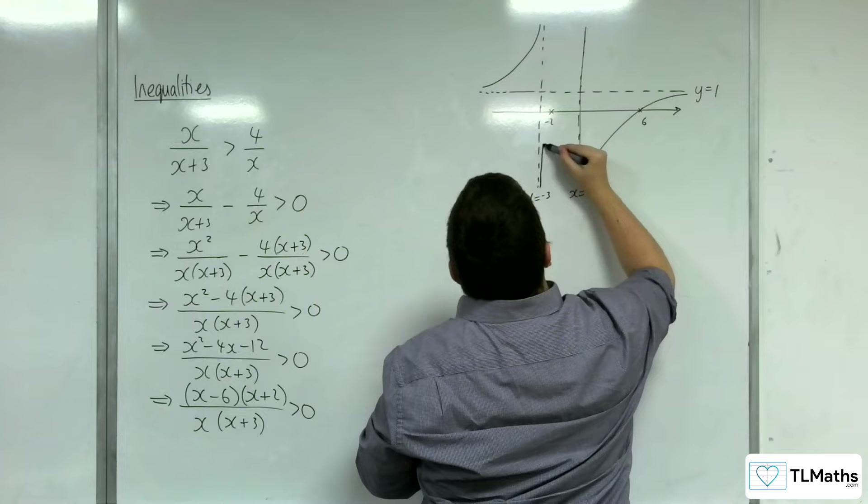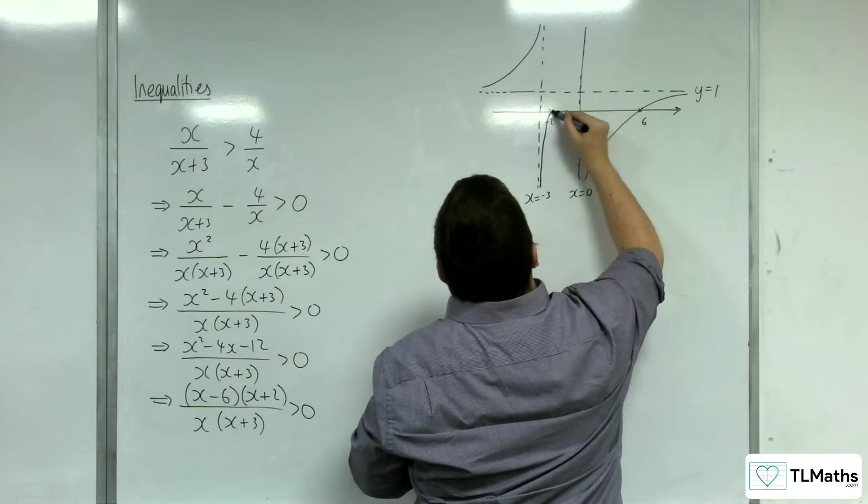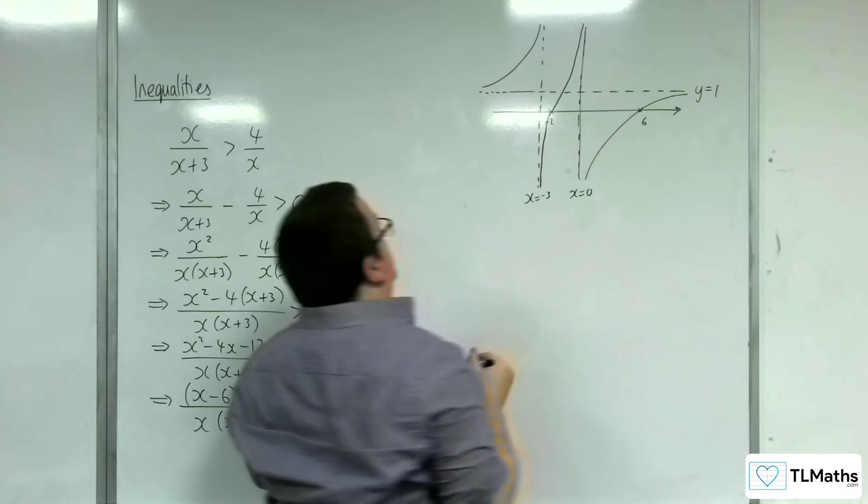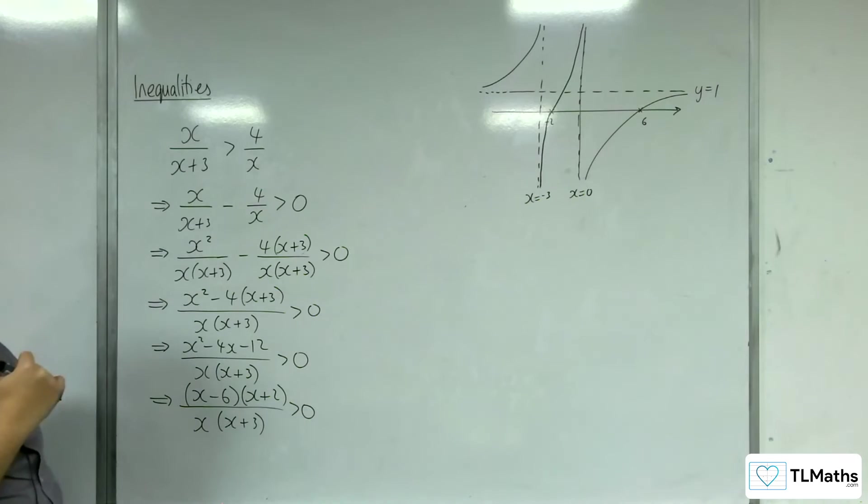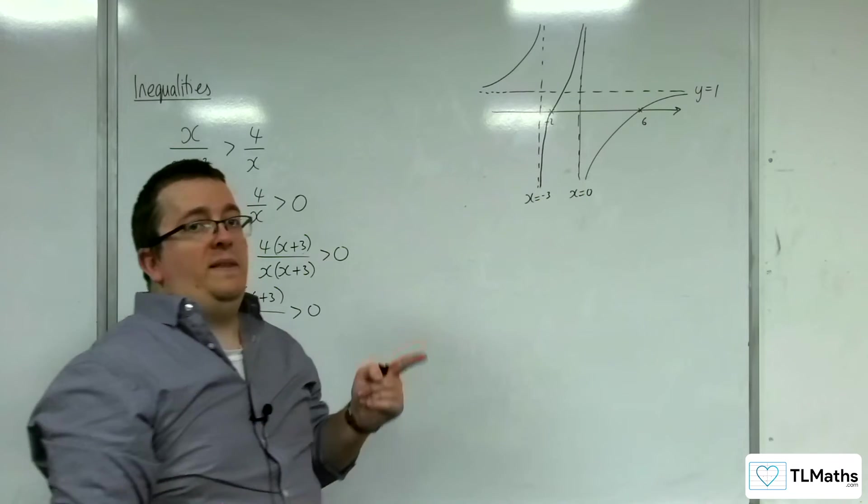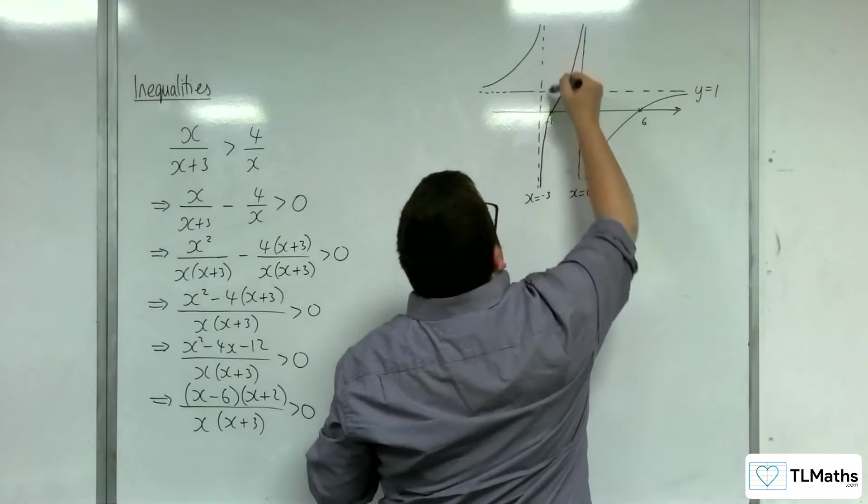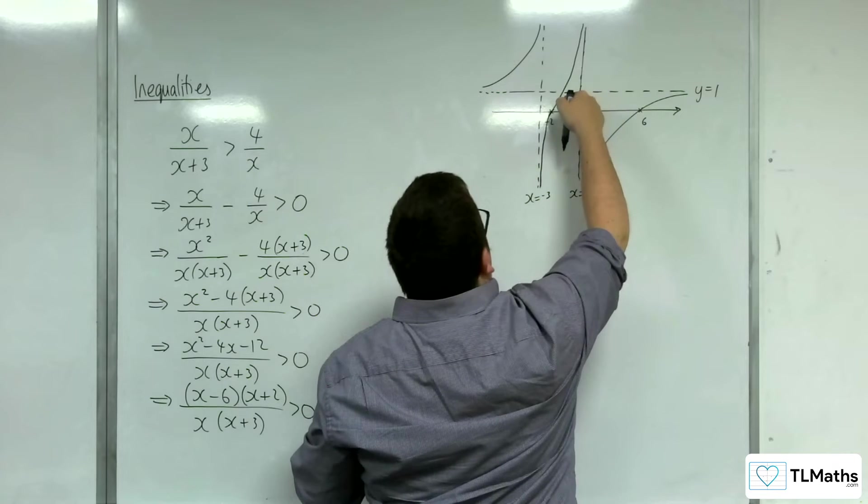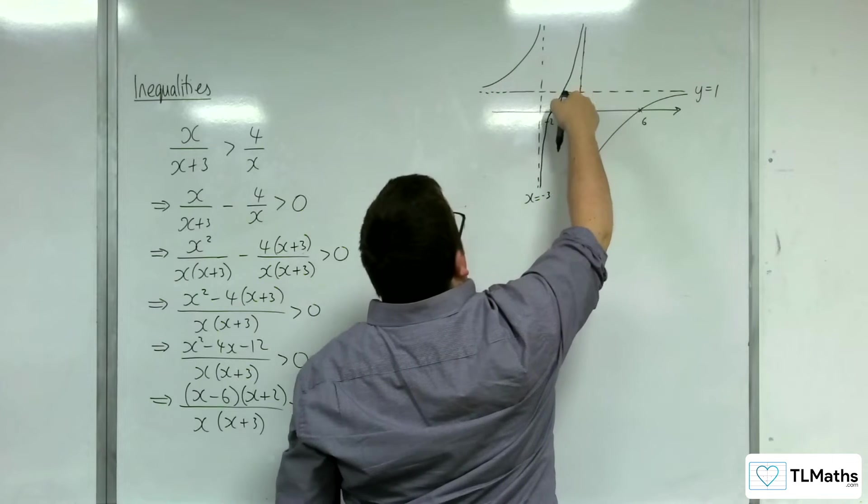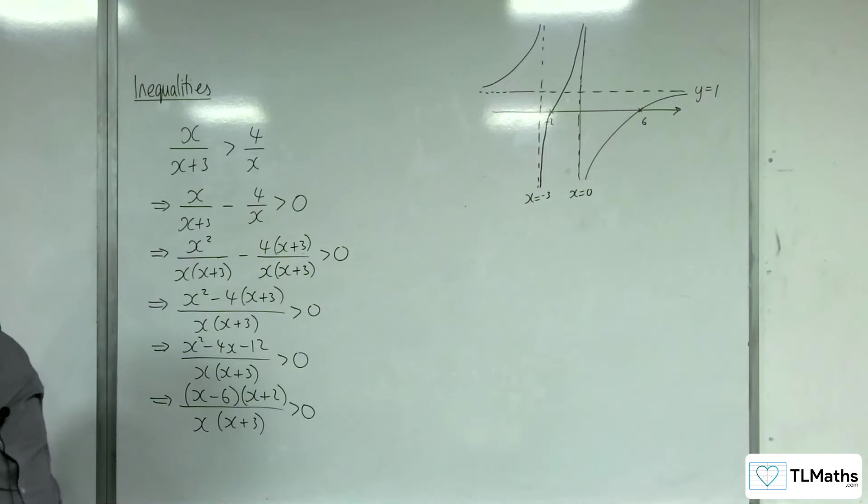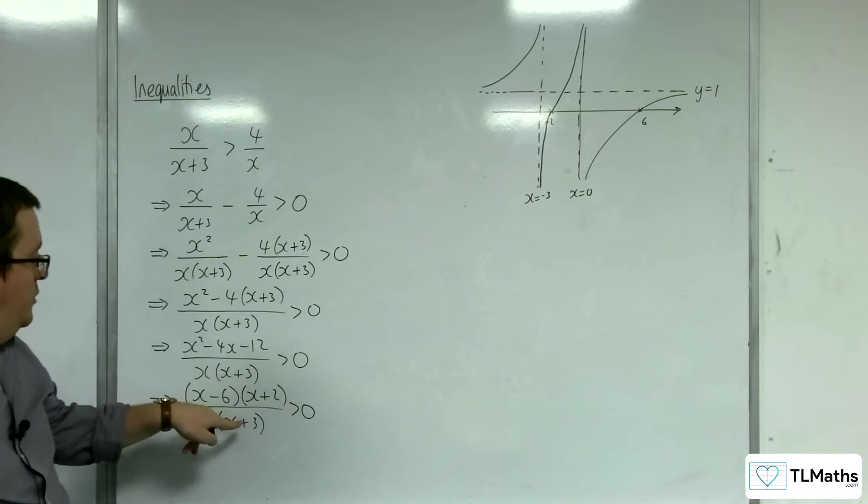it must be coming up from this point, through minus 2, and then tending towards the next asymptote. It's got to be this way round, rather than going that way round, because we know here it's above the x axis. So this is what the graph actually looks like for this function.